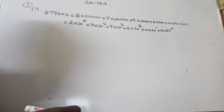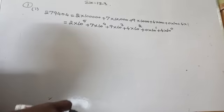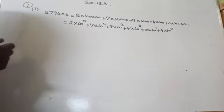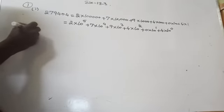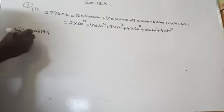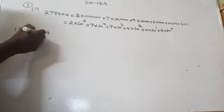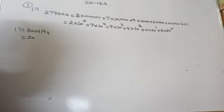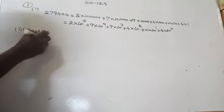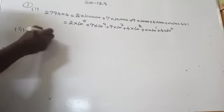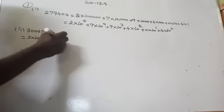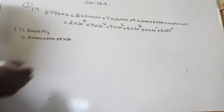Now come to the second part. The second number is 3006194. The place value of 3 is 30 lakh, so 3 into 10 lakh. Plus 0 into lakh, plus 0 into 10,000, plus 6 into 1000, plus 1 into 100, plus 9 into 10, plus 4 into 1.